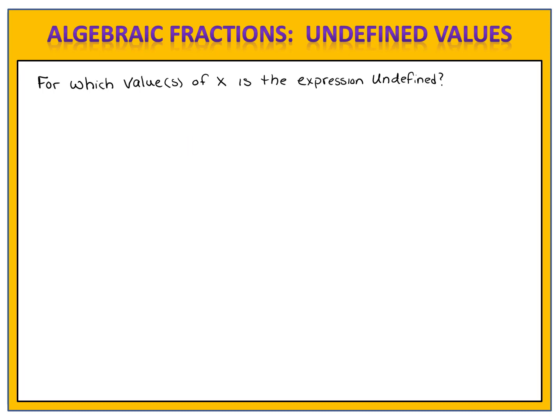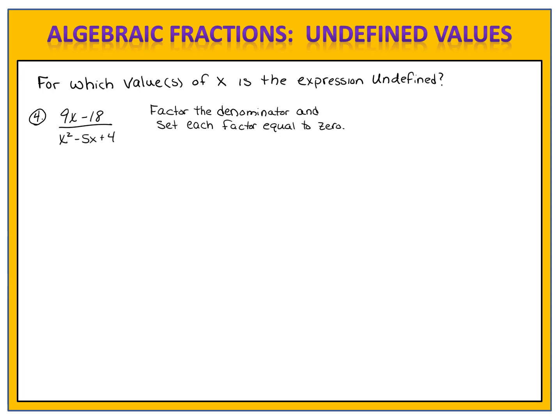Sometimes these problems can be a little bit trickier. Look at example four. Here in the denominator we have a trinomial, and it's much more difficult to solve because we have both an x squared and an x. So here's how we'll do it: we will factor the denominator and then set each of the factors equal to zero. We look at the denominator x squared minus 5x plus 4, set it equal to zero, and factor the polynomial to x minus 1 times x minus 4.